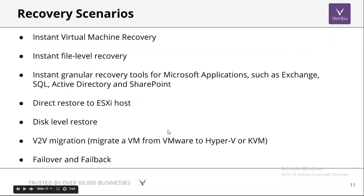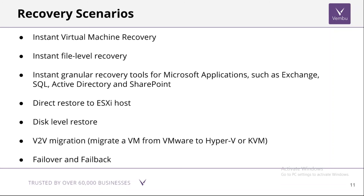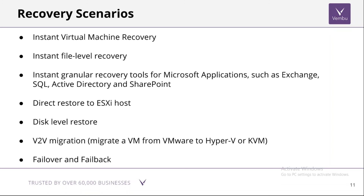Wambu VM Backup offers various levels of recovery. Instant Virtual Machine Recovery allows you to immediately spin up a downed VM on the BDR server's hypervisor, assign an IP, and continue using critical applications. Instant File Level Recovery lets you attach a backup VM like a local disk on the backup server to browse and restore specific files and folders. For applications like Exchange, SQL, Active Directory, and SharePoint, application-level recovery is available through our Universal Explorer tool.